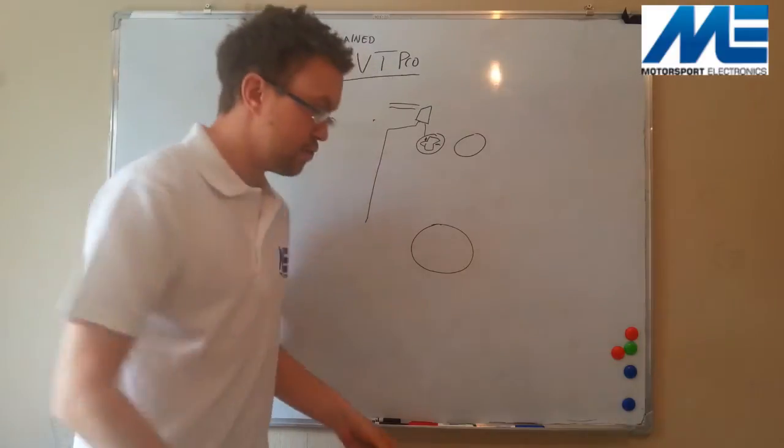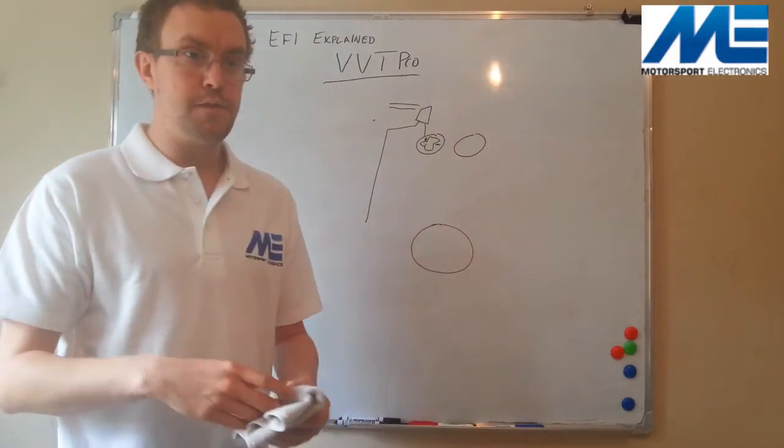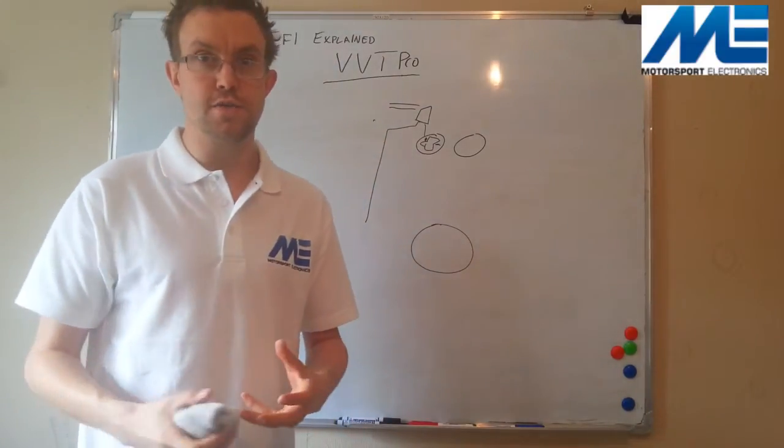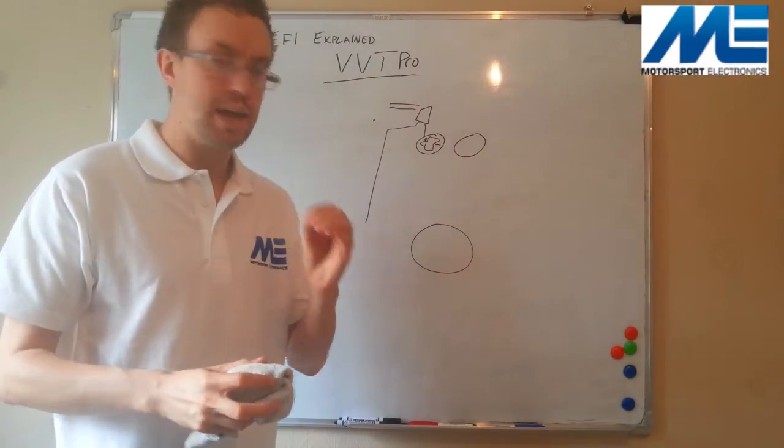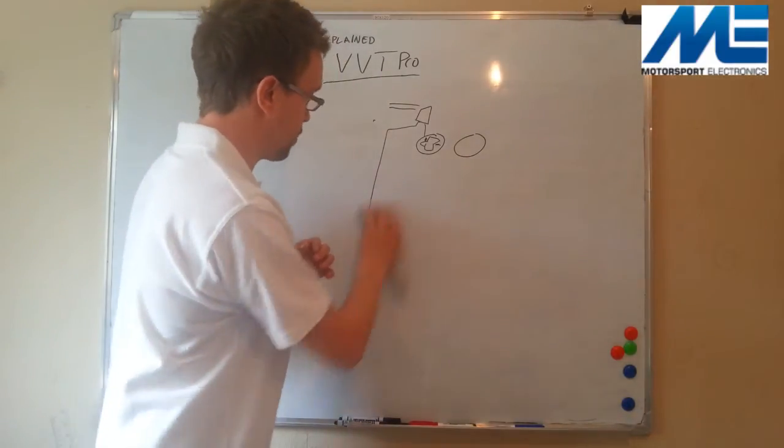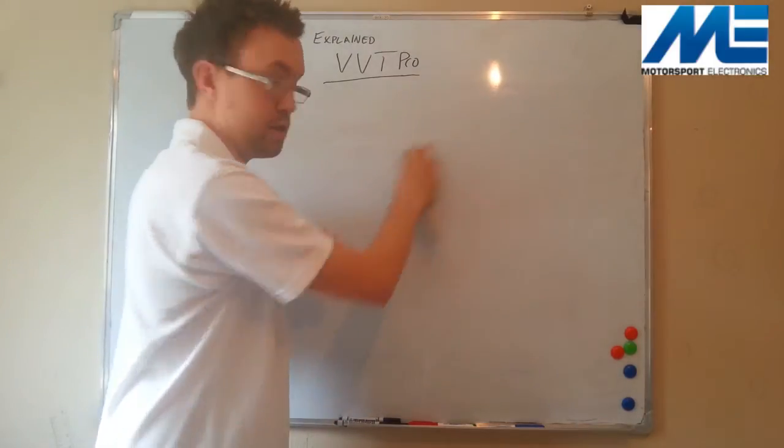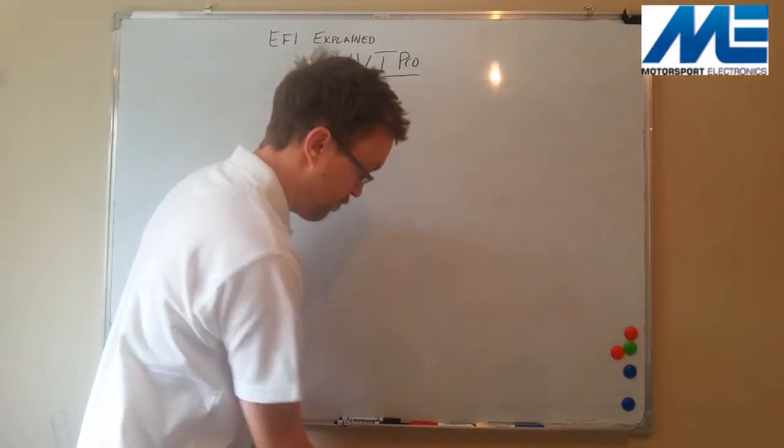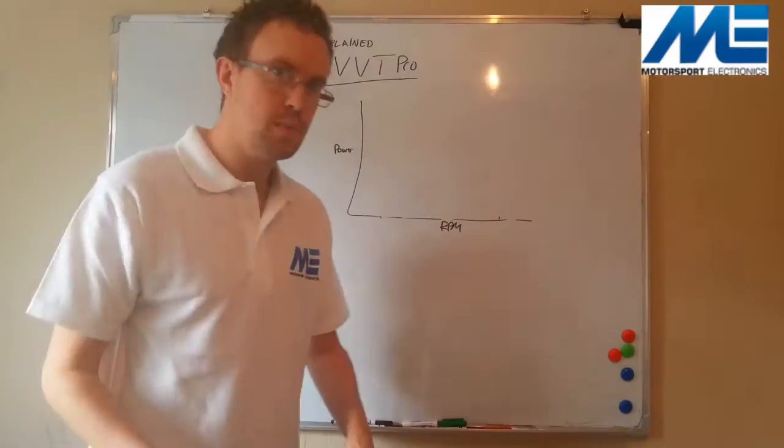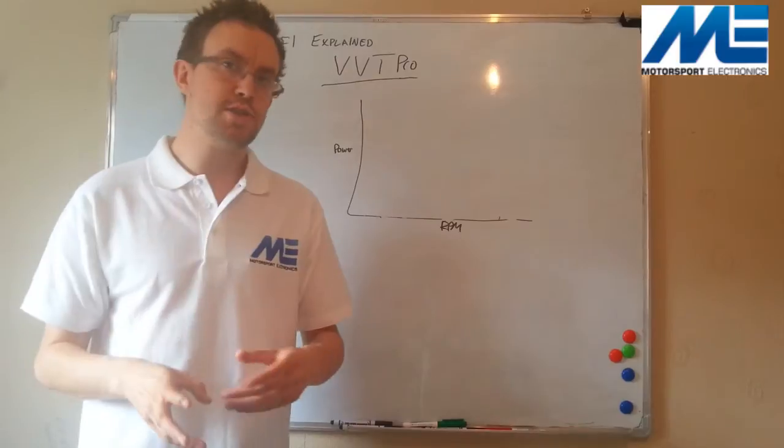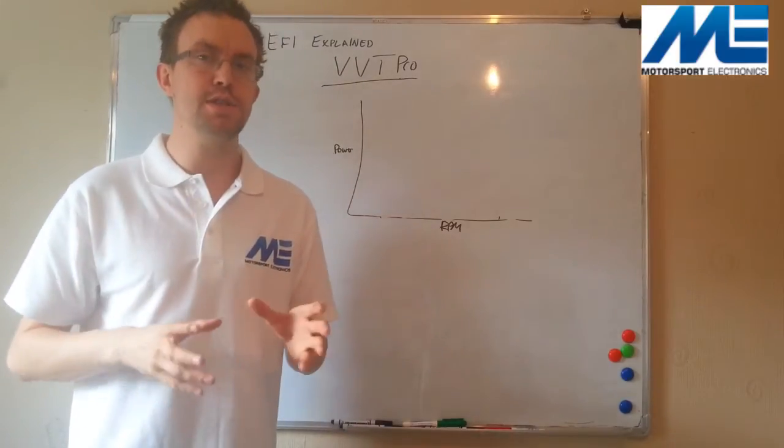Now, in traditional sense, what would happen is, with some ECUs like an MX600, for example, they don't actually have the software within the ECUs to accurately position the camshaft. And what most controllers would do, such as a MegaJolt or our Nodiz system, without the VVT Pro, is it would simply switch the cam on, to switch that solenoid on at a certain RPM.